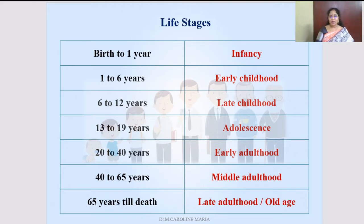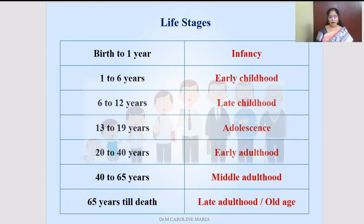The different life stages are: 0 to 1 year is called infancy; 1 to 6 years called early childhood; 6 to 12 years are called late childhood. So childhood spans from 1 till 12 years. Adolescence is 13 to 19 years. Then 20 to 40 is early adulthood, 40 to 65 is middle adulthood, and 65 till death is late adulthood, otherwise called old age.